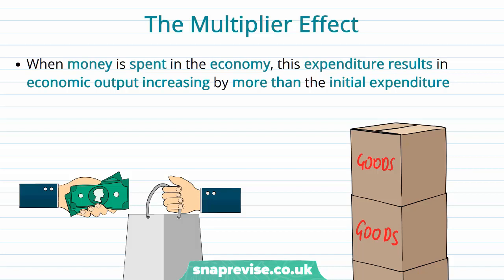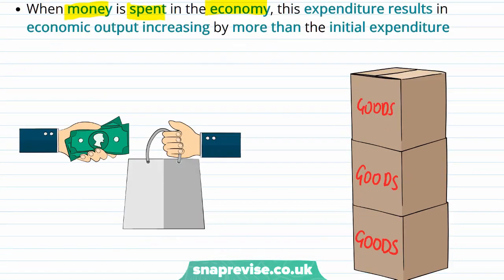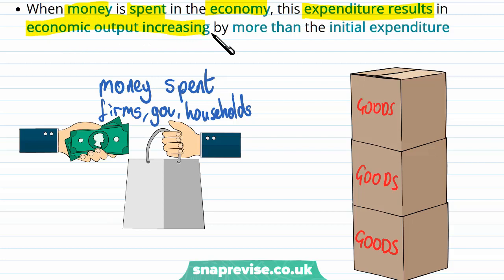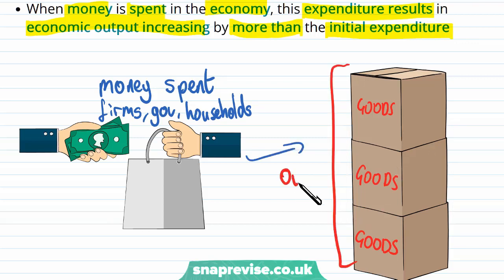To start off our discussion of what the multiplier effect is, we're going to be saying that there is some money that is going to be spent in the economy. That money is being spent by all of our economic agents — that could be our firms, our households, the government, all of them. And this expenditure is going to result in economic output increasing by more than the initial expenditure. So it seems a bit crazy that there's this multiplier effect on the output of the economy as a result of just one initial spending expenditure.